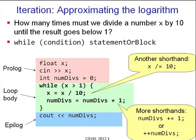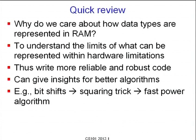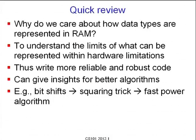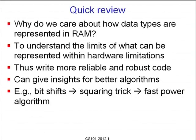Instead of writing x = x/10 we can write x /= 10, or numdivs += 1, or ++numdivs. Quick review: we looked at a bunch of data types and how they are represented in RAM. Some of that might have been unfamiliar — binary arithmetic may take a little effort. Why do we care? We care because we want to understand the limits of what can and cannot be represented within the hardware limitations. We will see many more examples in the upcoming while loop examples. Why do you want to understand the limits? So that we can write more reliable and robust code.